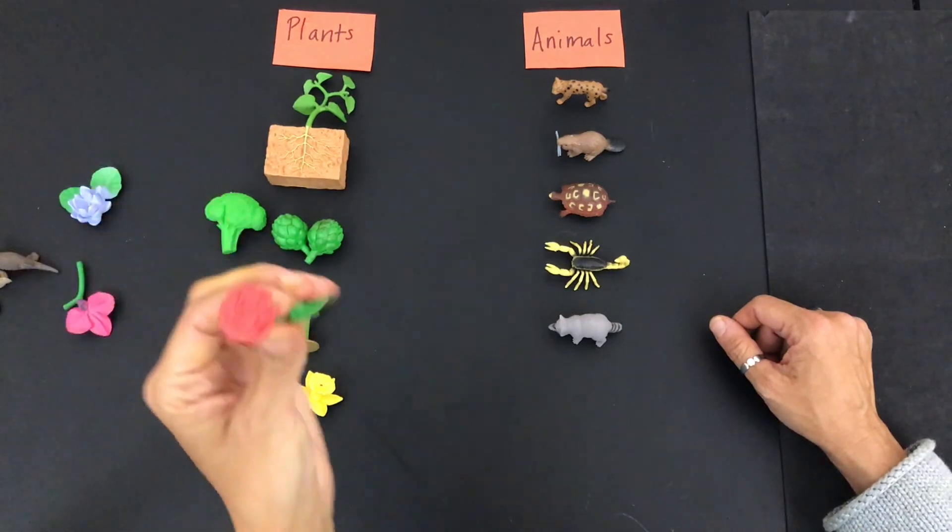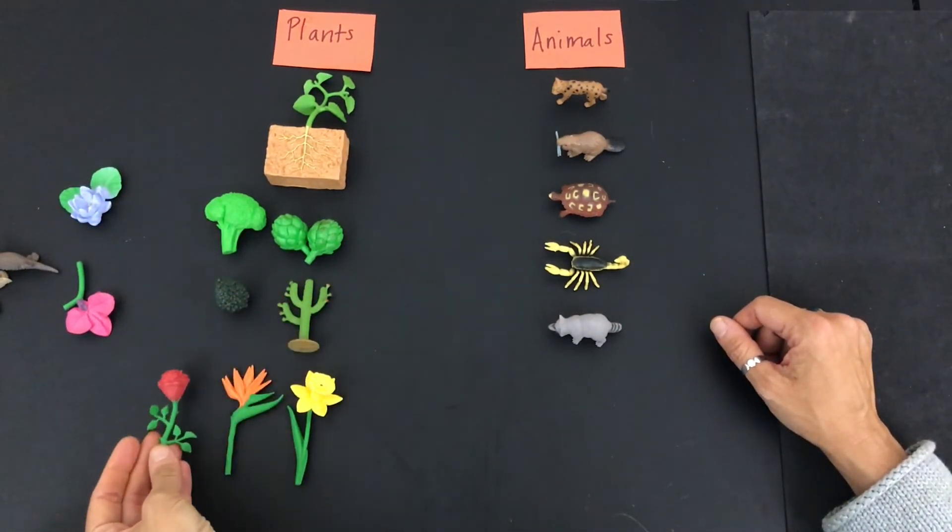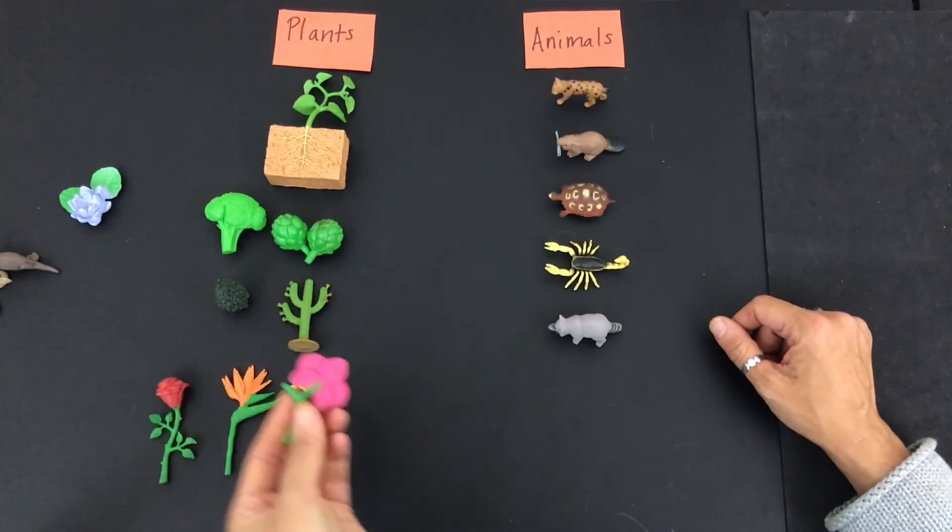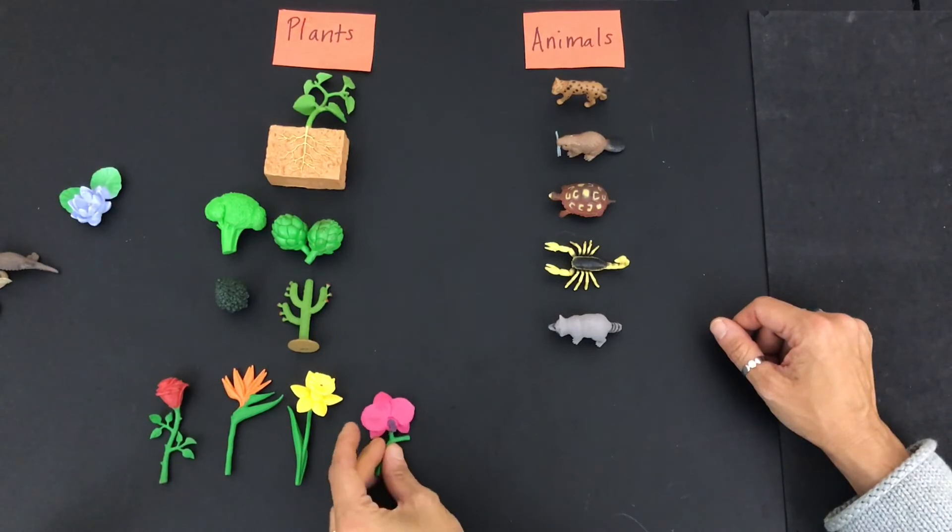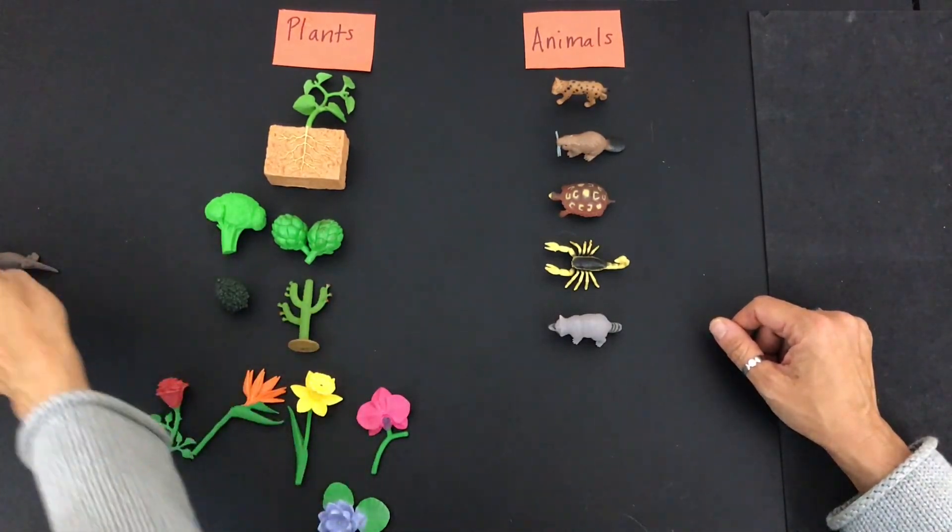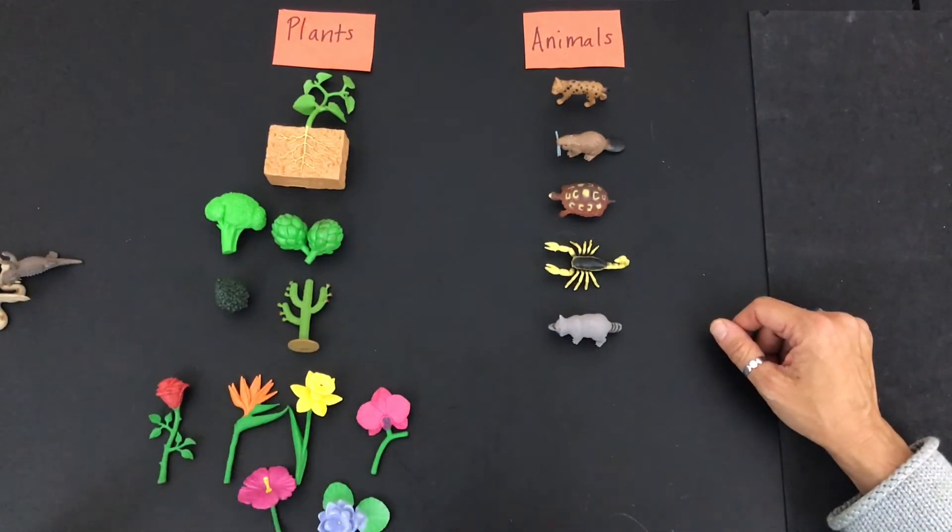What about a rose? A rose is a flower so it's a plant and we can find all of our little flowers here. All our little plants. All our flowers are plants.